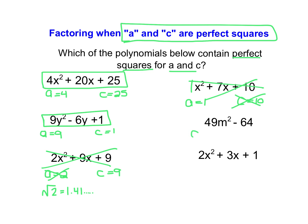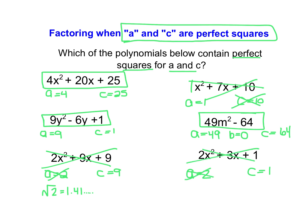Here we have an A value equal to 49. Notice there's no B value — our B value would really be 0 — and our C value is equal to 64. Both of those can be perfectly square rooted, so this strategy will work here. And finally, we have A equals 2 and C equals 1. C equals 1 is a perfect square but A equals 2 is not, so this strategy would not work for that trinomial. That's the first step: identifying whether or not the strategy we're about to look at truly does work.